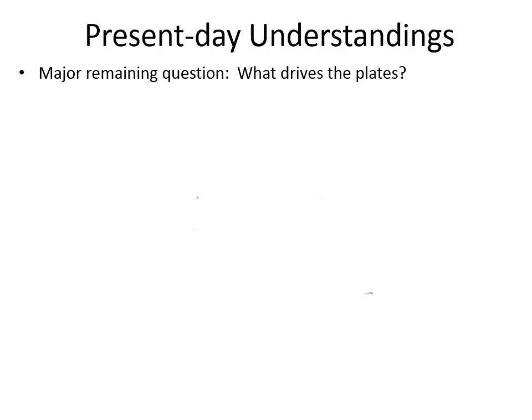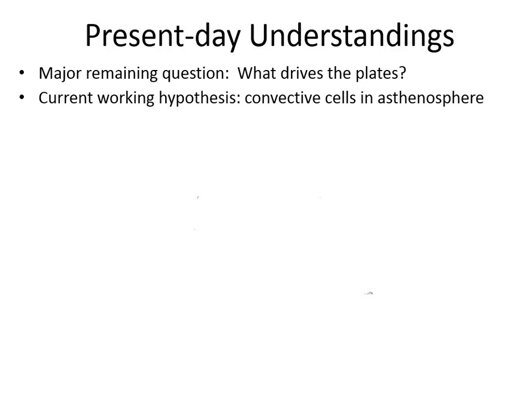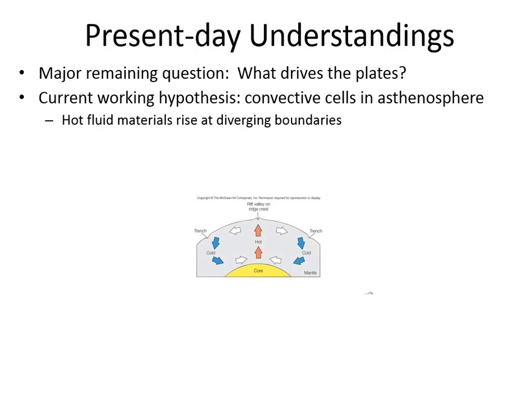There are still questions remaining. We talked about the asthenosphere being kind of the slick thing that the lithosphere is moving around on. What is creating that movement? Back in the astronomy unit, we talked about convection cells within the Earth's mantle. Basically, warm liquid mantle is rising, it cools down, and then it falls back down. These two convection cells actually help drive the movement of the lithosphere on top of them.